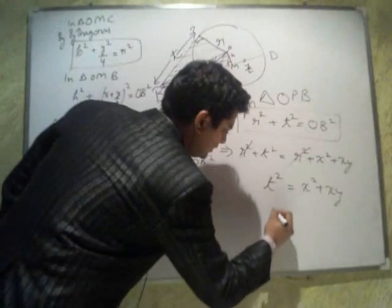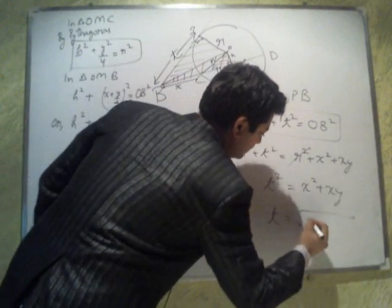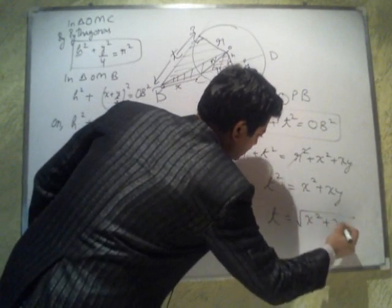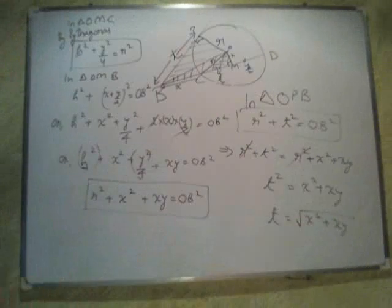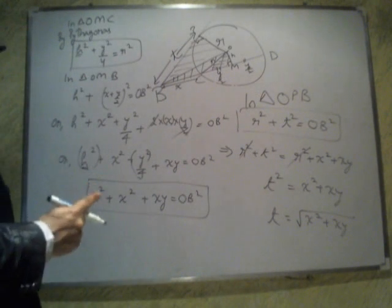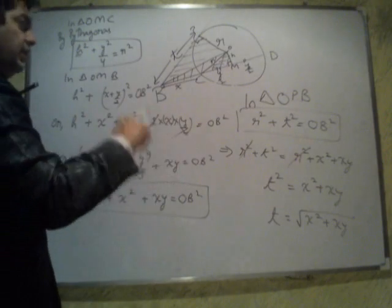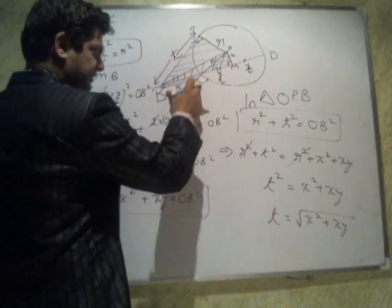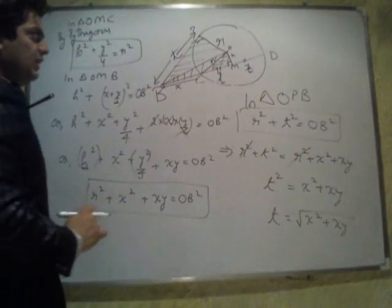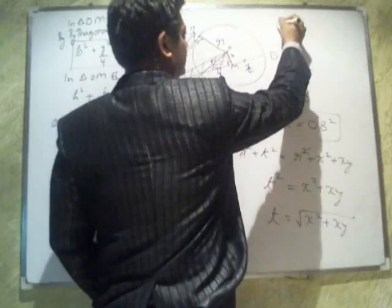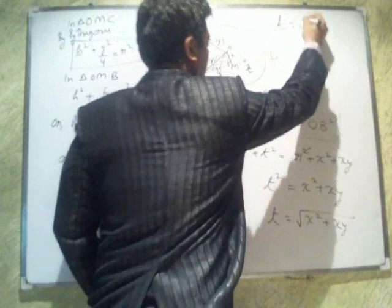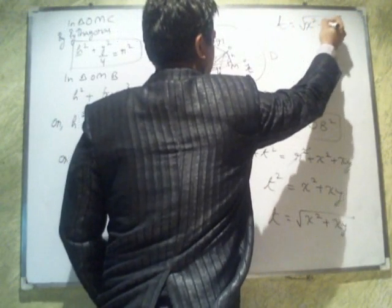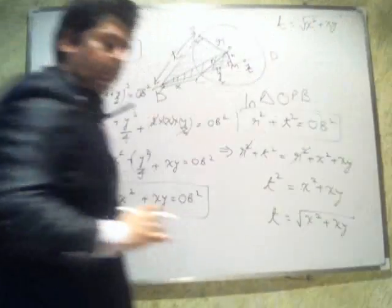And hence you can find that the length of the tangent is equal to under root of square of this length and product of this into this. So let me write it here.